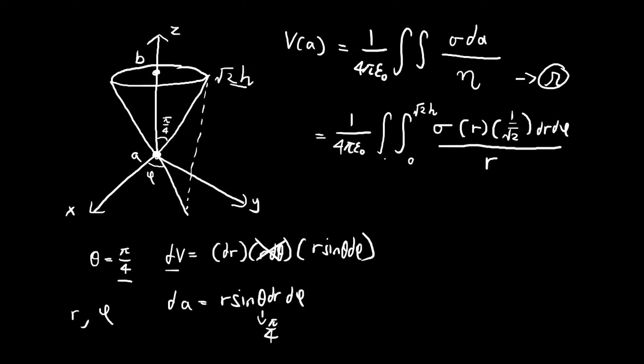For phi, it's going to go from 0 to 2 pi, so it spins in a circle to draw the cone.